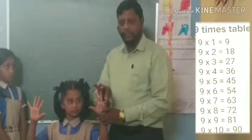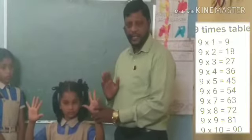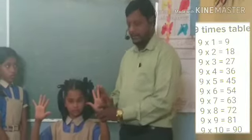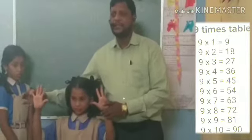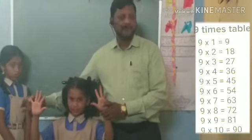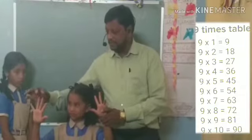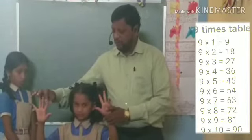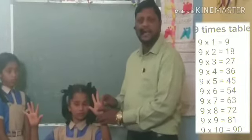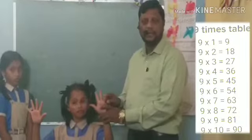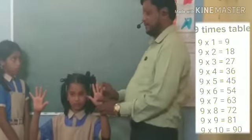Now tell me how many fingers are before the closing finger. After the closing finger is 0. Before the closing finger, starting from the right hand small finger: 1, 2, 3, 4, 5, 6, 7, 8, 9. So there are 9 fingers. The answer is 9.